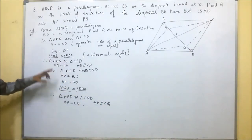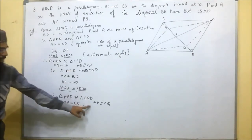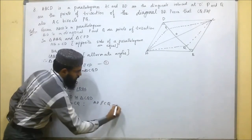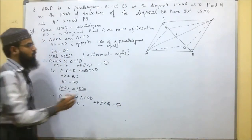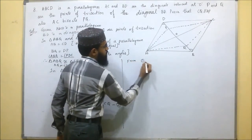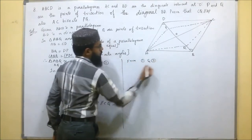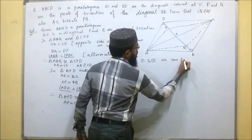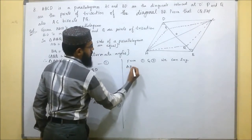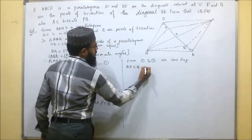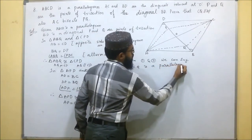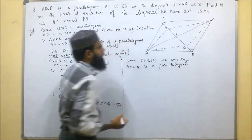As we can see, opposite sides AP and CQ are both equal and parallel. Therefore, from these two results, APCQ is a parallelogram.